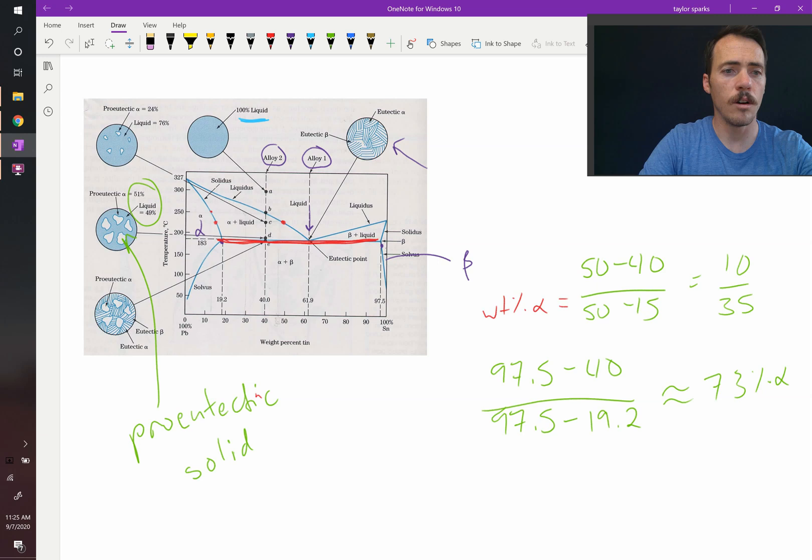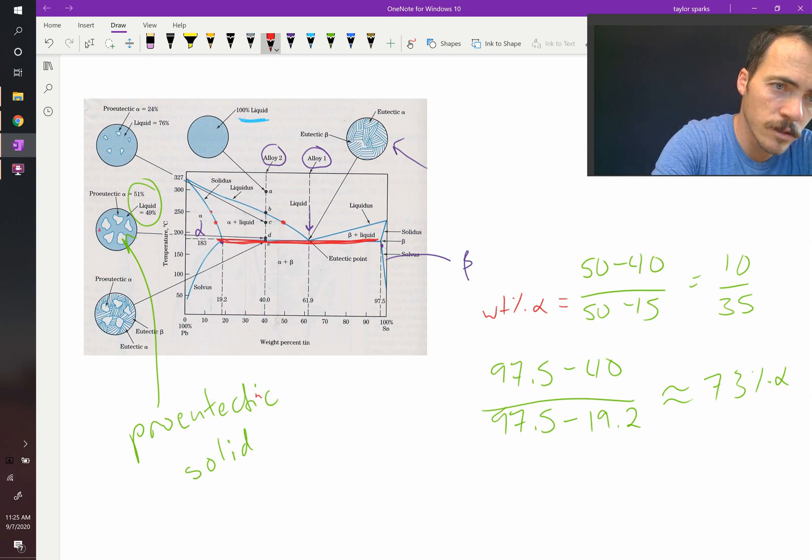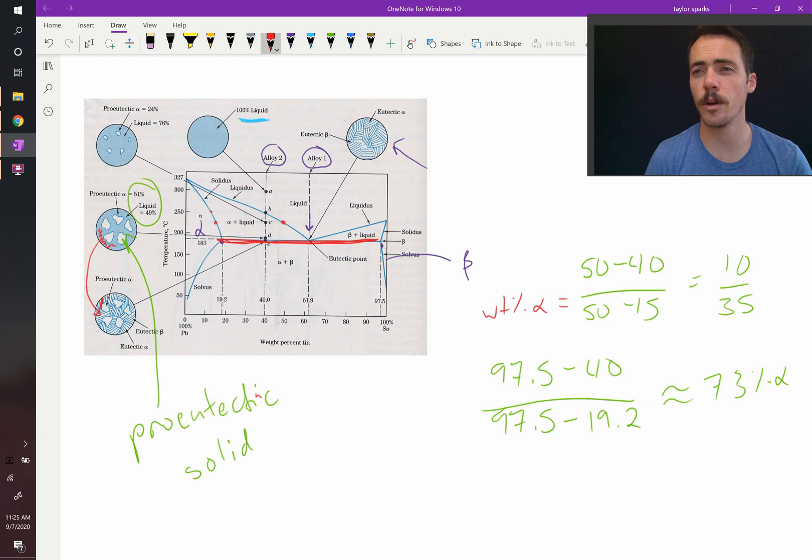And then, when you go through the reaction, everything that used to be liquid, this stuff, this dark blue phase here, that all turns into this lamellar structure because it undergoes the eutectic reaction. So we call that a mixture of eutectic alpha and beta, whereas this would be pro-eutectic alpha.